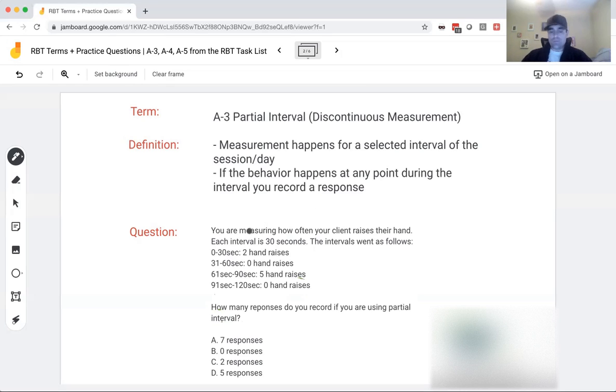Let's look at an example. You're measuring how often your client raises their hand. Each interval is 30 seconds. The intervals went as follows: Zero to 30, the first 30 seconds, there are two hand raises. The second 30 seconds, zero hand raises. The third 30 seconds, five hand raises. And the fourth, zero hand raises. So we had two, zero, five, zero. So we had four intervals total, and a response happened in two of those.